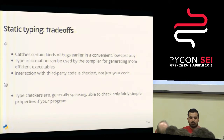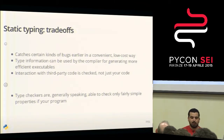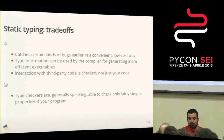As with everything, there are some trade-offs. Static typing is good because it catches certain kinds of bugs during development - it's a very low cost way to avoid certain classes of bugs. This type information can be used by the compiler for generating more efficient programs. Not only your code is checked, but all the interactions with third-party code are also checked. Generally speaking, type checkers are not very sophisticated - they check very simple properties of programs.